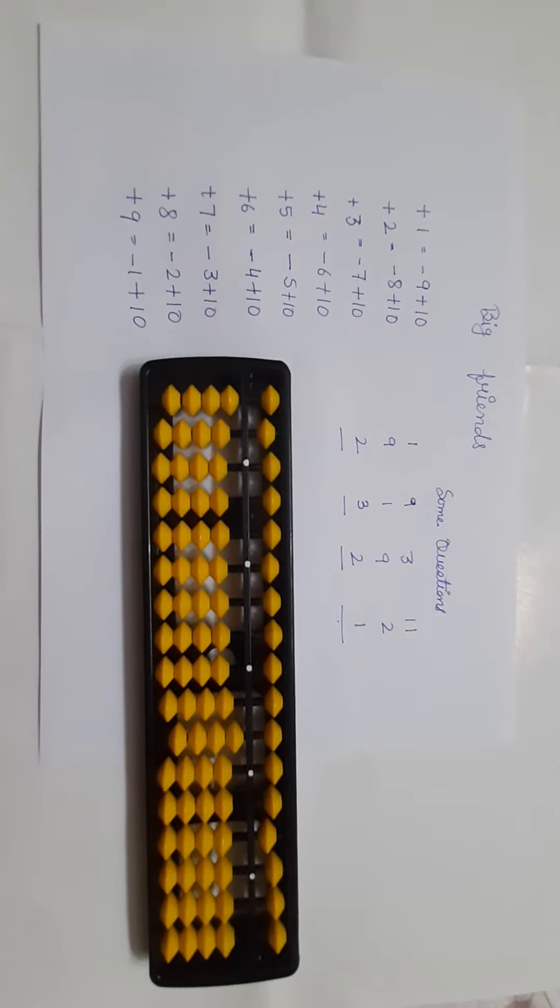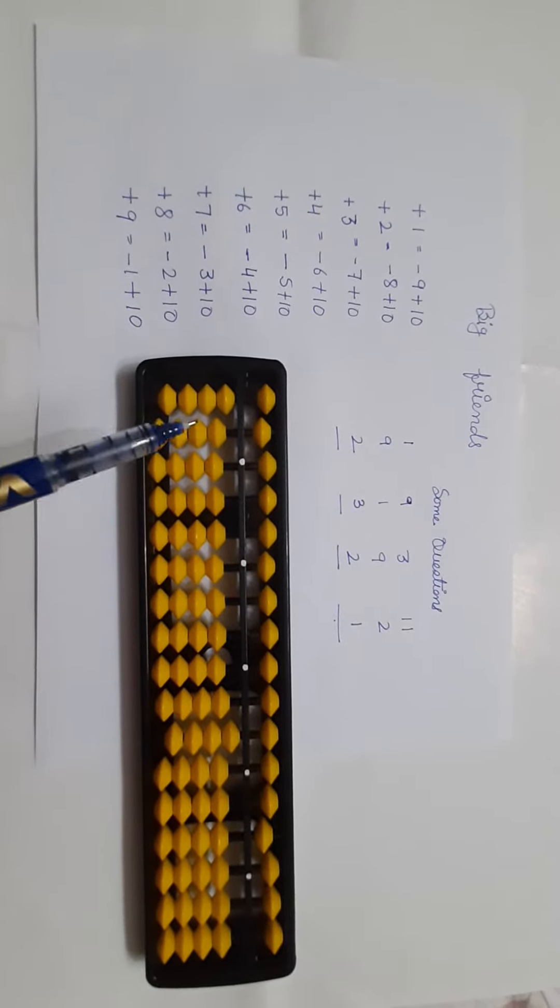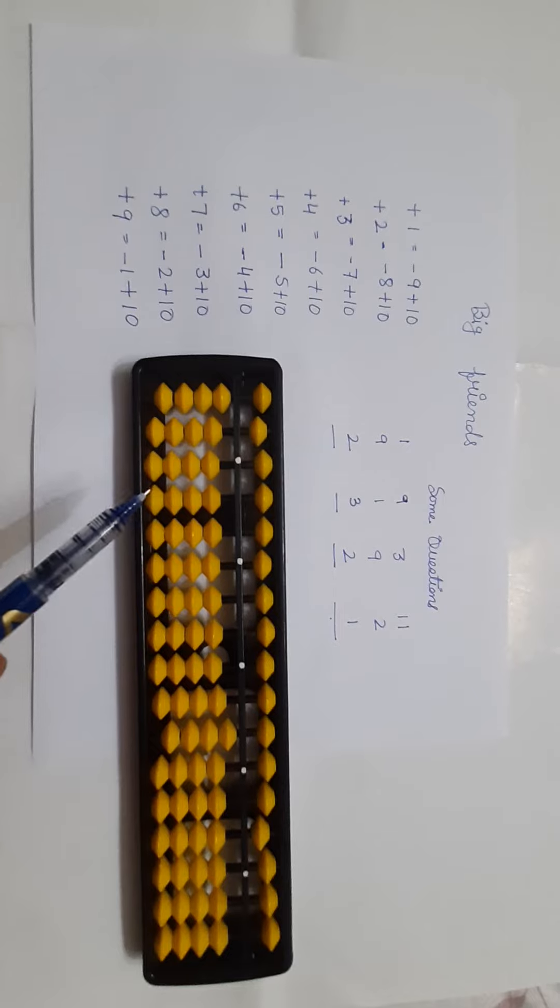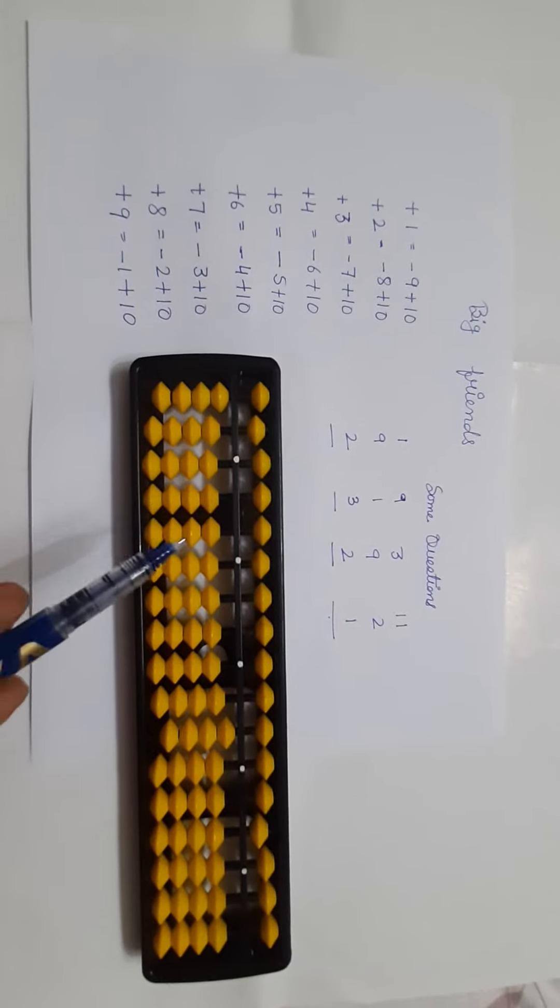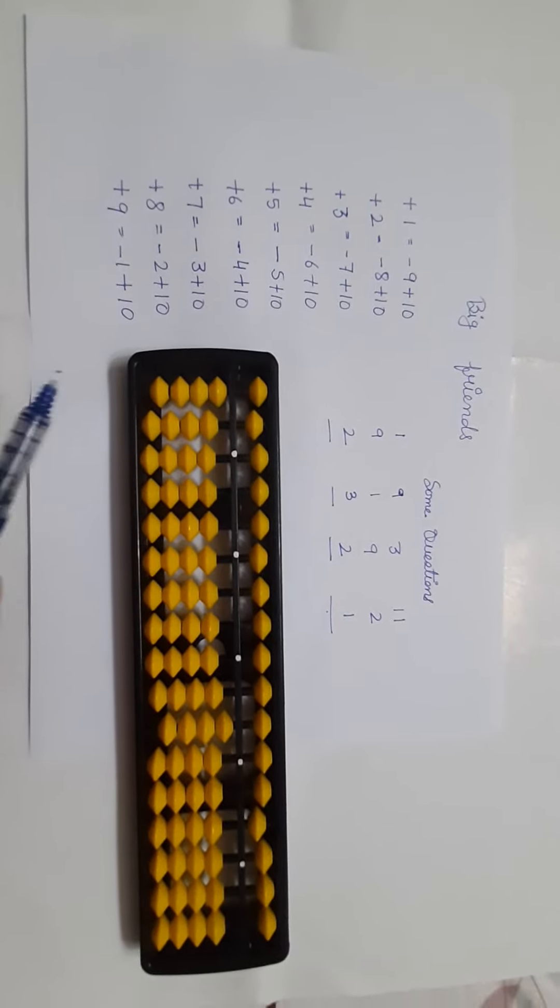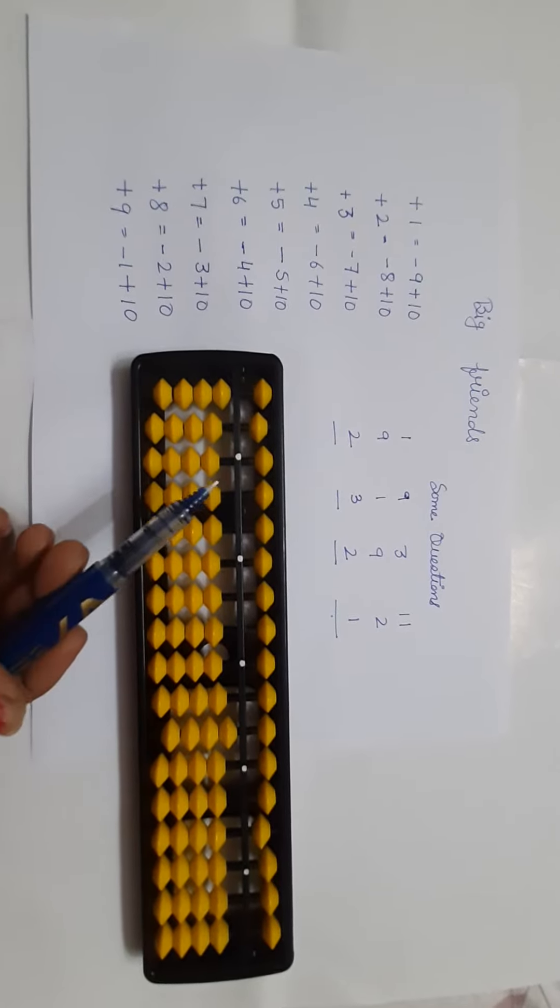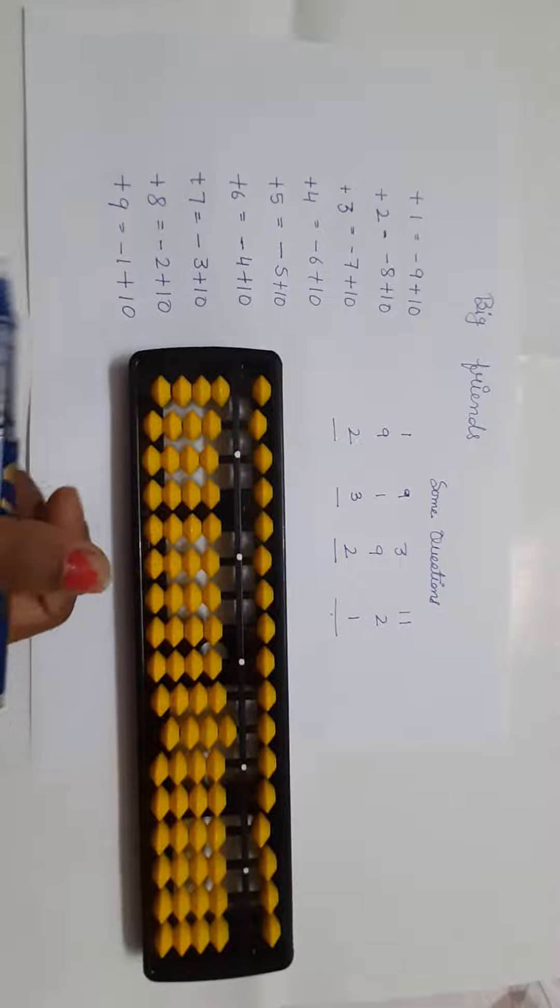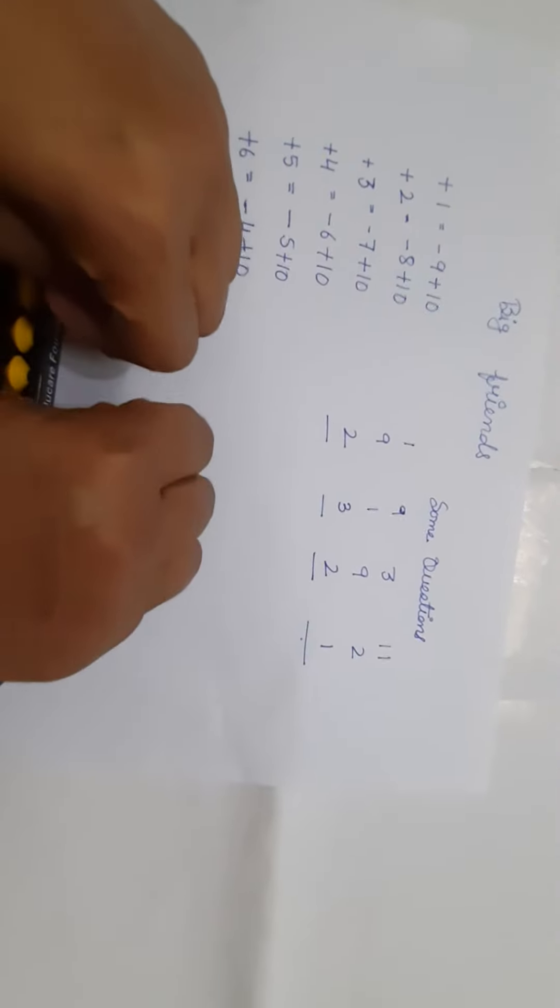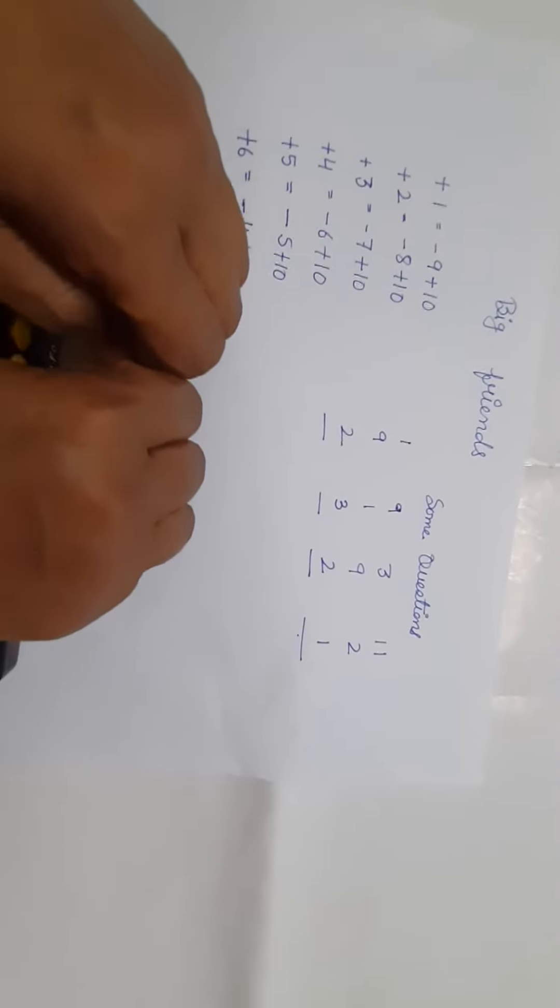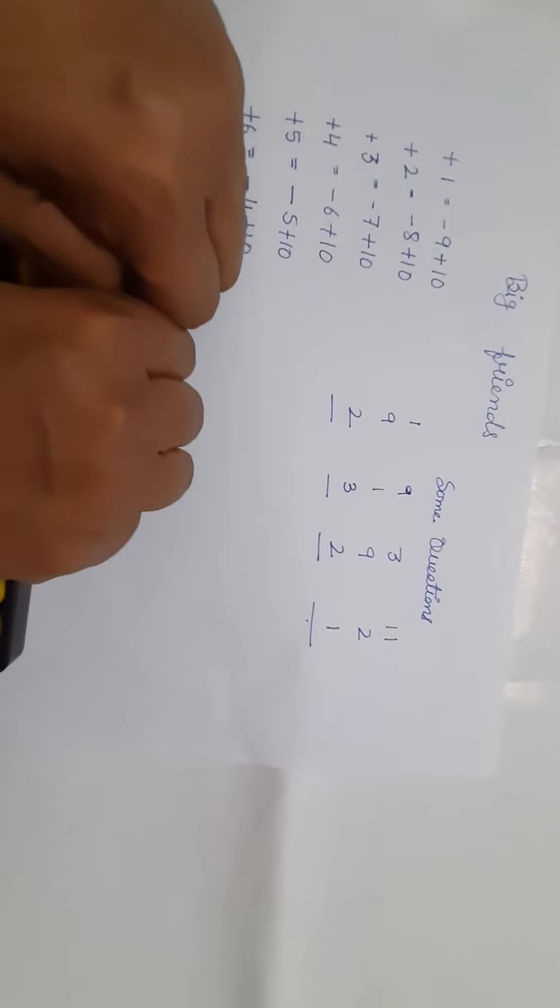1, 2, 3, 4 have their small friends also. So we should first check whether we can use small friends in the case, and if no, then only we should use big friends. So let's solve some questions using finger and abacus.